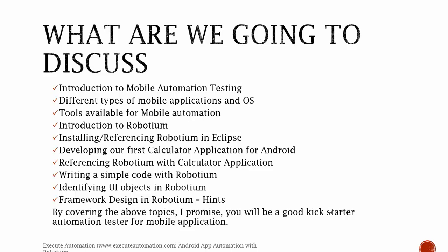So what are we going to cover in this series? The first thing is the introduction to mobile automation testing, the different types of mobile applications and operating systems, what tools are available for mobile automation, and the introduction to Robotium — which is the tool we are going to focus on mainly in this series.